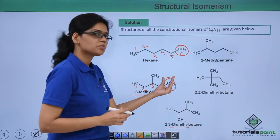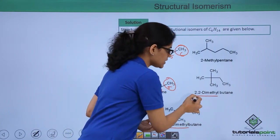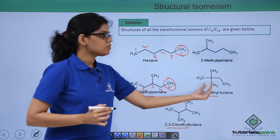Also, if I change the position of this particular methyl group to position 3, then I end up getting a structure like this, which is 2,2-dimethylbutane.